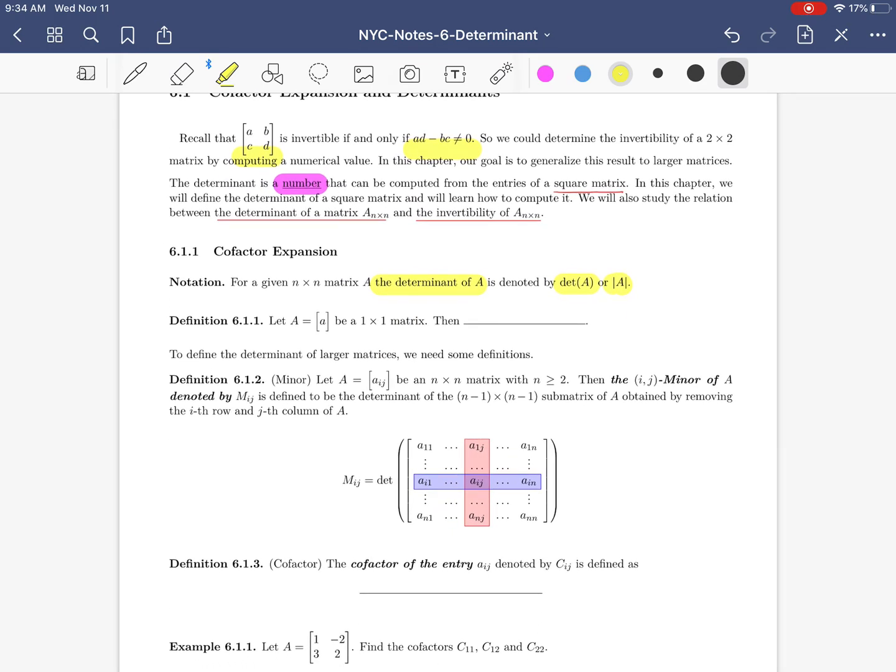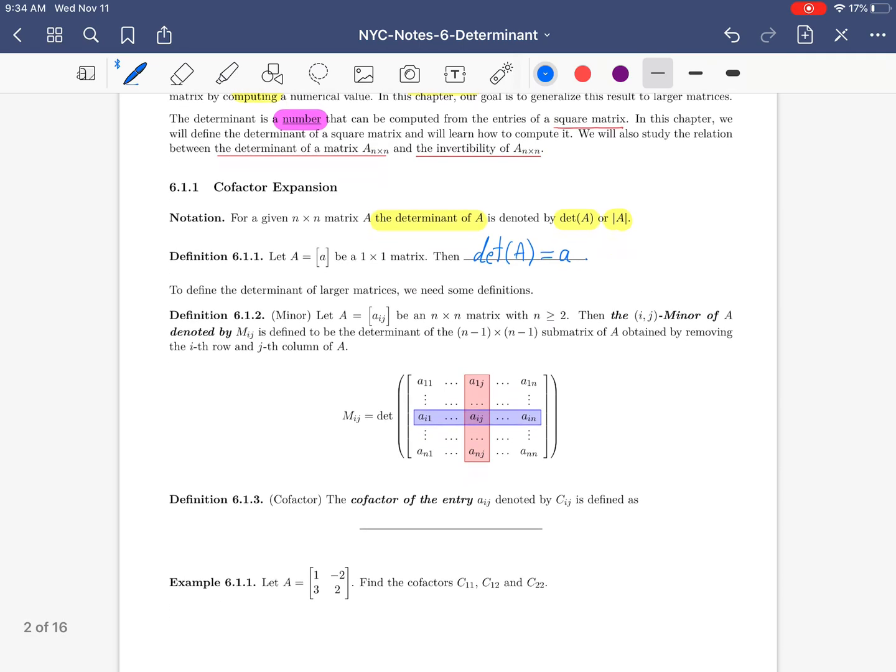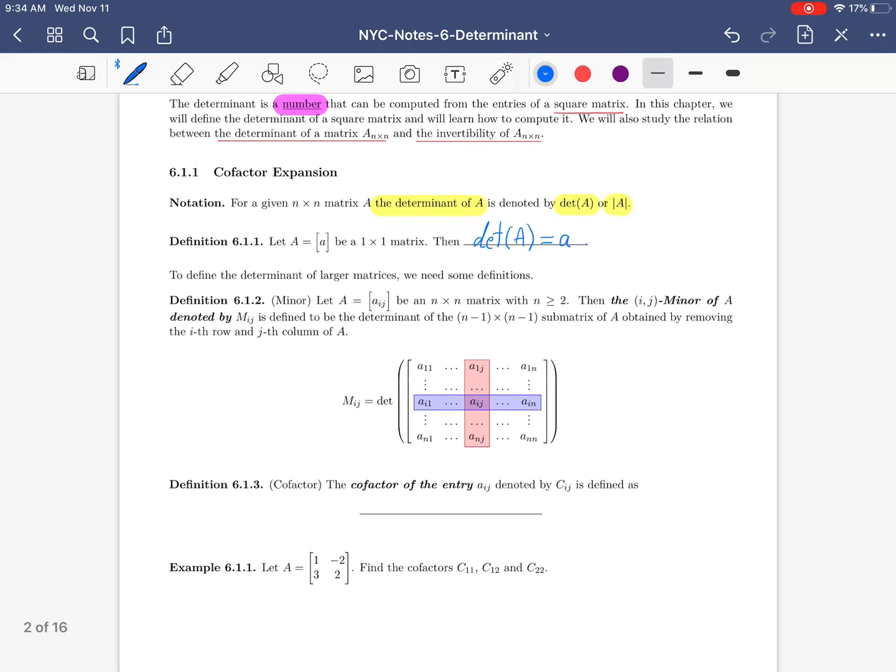Definition 6.1.1: Let A be a one by one matrix. Then the determinant of A is just that one entry. Now, to define determinant of larger matrices, we need a couple of definitions, like one of them is called minor and one more is cofactor.